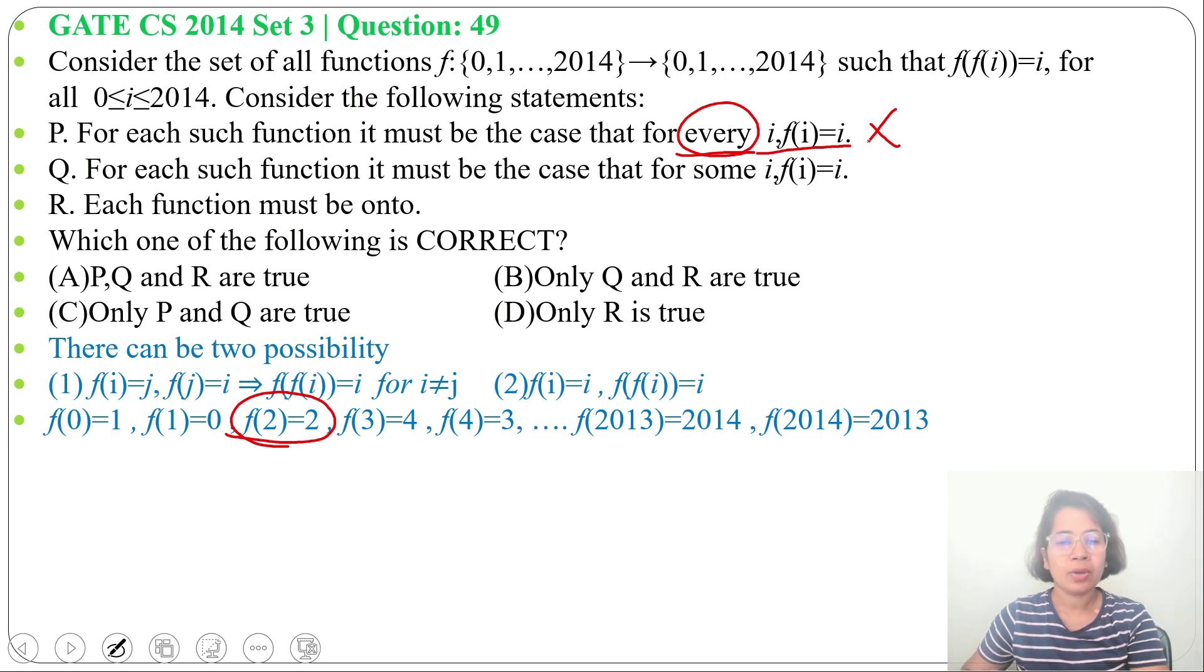Next statement Q: for each such function, it must be the case that for some i, f(i) = i. This is true. It is true due to this word 'some'. So for some i, it is true. Let me take a small example.